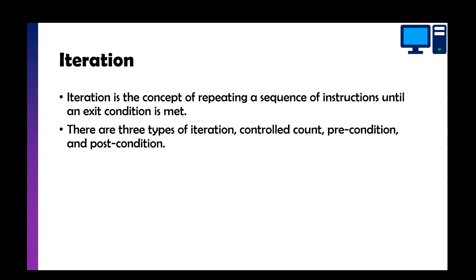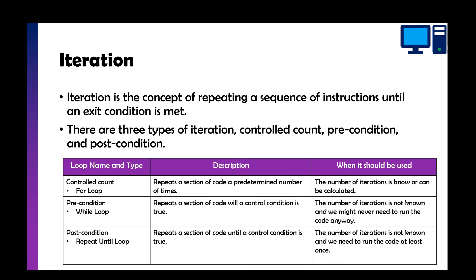So we've got a count control loop — that's what a for loop is. That's where we loop a set number of times. A count control loop is our for loop, and that is where we repeat a section of code a set number of times: once, twice, ten times, a million times. We should only use this when we know how many times it needs to loop — for example, code that loops three times and then locks the user out if unsuccessful.